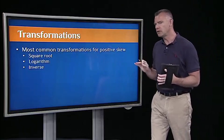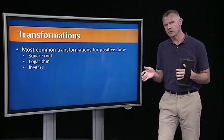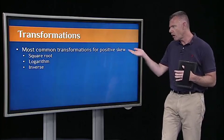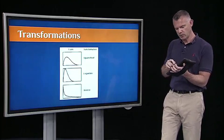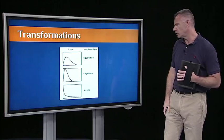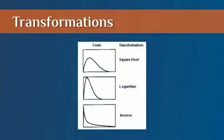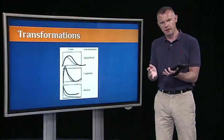The most common data transformations applied for positively skewed distributions are the square root, the logarithm, and the inverse. Here's a picture of what those look like. If we have a distribution that looks positively skewed, then a square root transformation might help to make it look more normal. A logarithmic transformation might help, and an inverse transformation may help to make it look more normal.